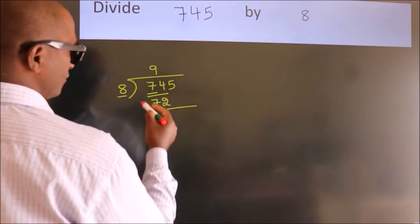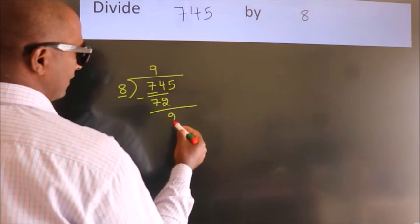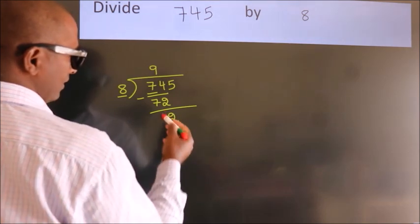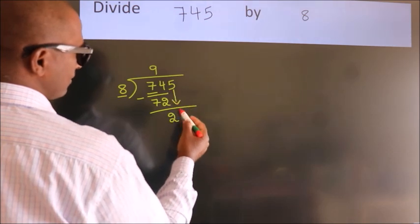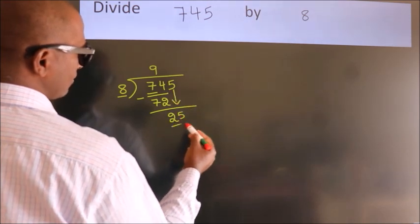Now, we should subtract. We get 2. After this, bring down the beside number. So, 5 down. So, 25.